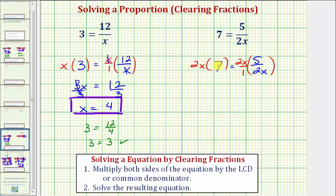So on the left we have two x times seven, that's 14x, equals on the right side, two x divided by two x would simplify to one. So we just have one times five, which equals five. So to solve for x here, we divide both sides by 14. Simplifying, we just have x equals five fourteenths, which is the solution to our equation or proportion.